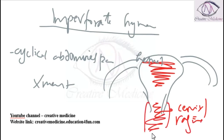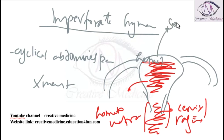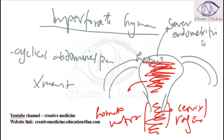Second, there will be hematometra, which is because of collection of blood in the uterus. The uterus may be palpable perabdominally, or the uterus can cause severe endometriosis. The most common cause of hematometra is imperforate hymen.